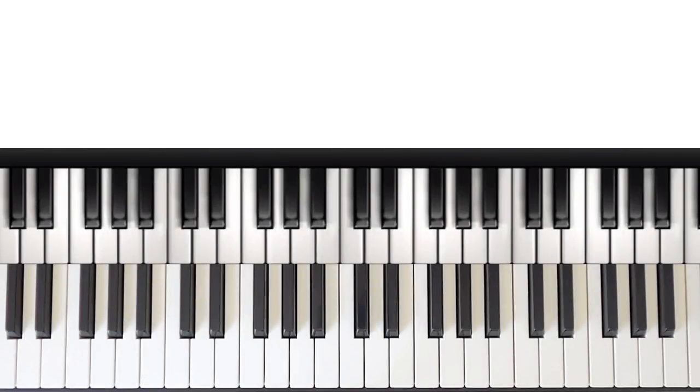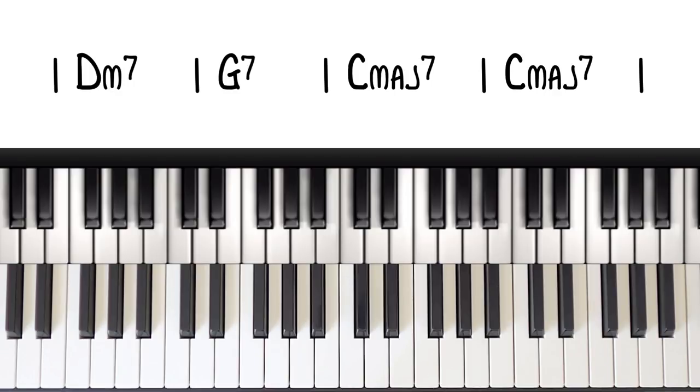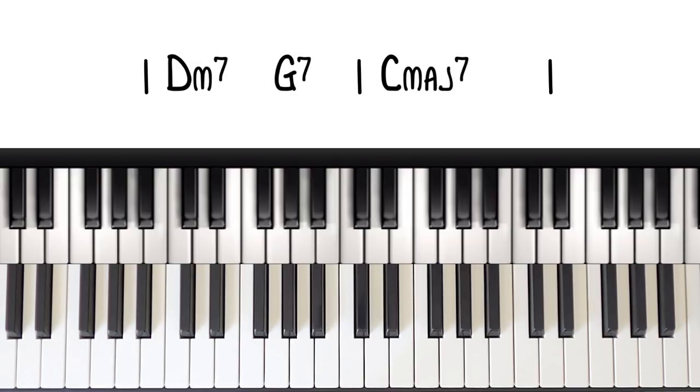So this little lick is for a short form 2-5-1 and what I mean by that is a 2-5-1 that lasts for 2 bars rather than 4. So this is what a long form 2-5-1 looks like and this is what a short form 2-5-1 looks like. I guess you could use the lick over a long form one but it would just be really slow so whatever tickles your fancy I guess.